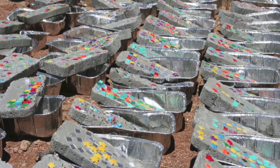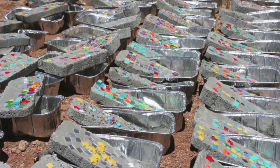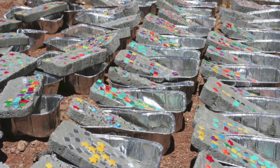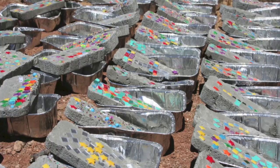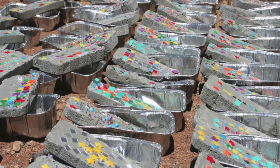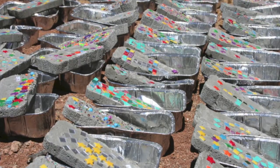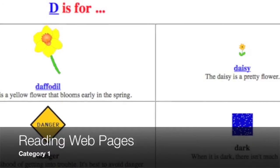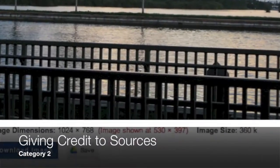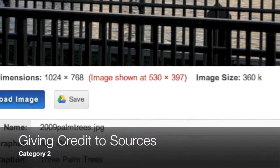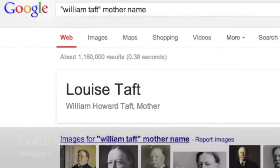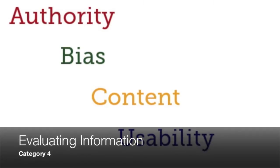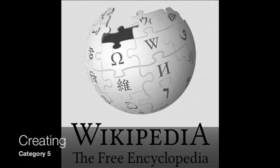My goal is to help you think about the stepping stones you need to provide your students to cross the river of information that they will find. These skills can be adapted to any age student and break down into five categories: reading web pages, giving credit to your sources, building a search query, evaluating the information, and creating their own information on the internet.